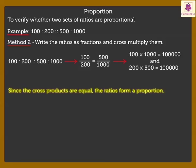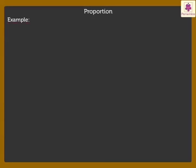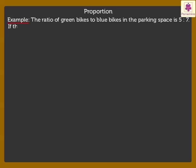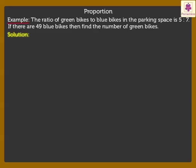Next, we will find the missing number using the concept of proportion. The ratio of green bikes to blue bikes in the parking space is 5 is to 7. If there are 49 blue bikes then find the number of green bikes.